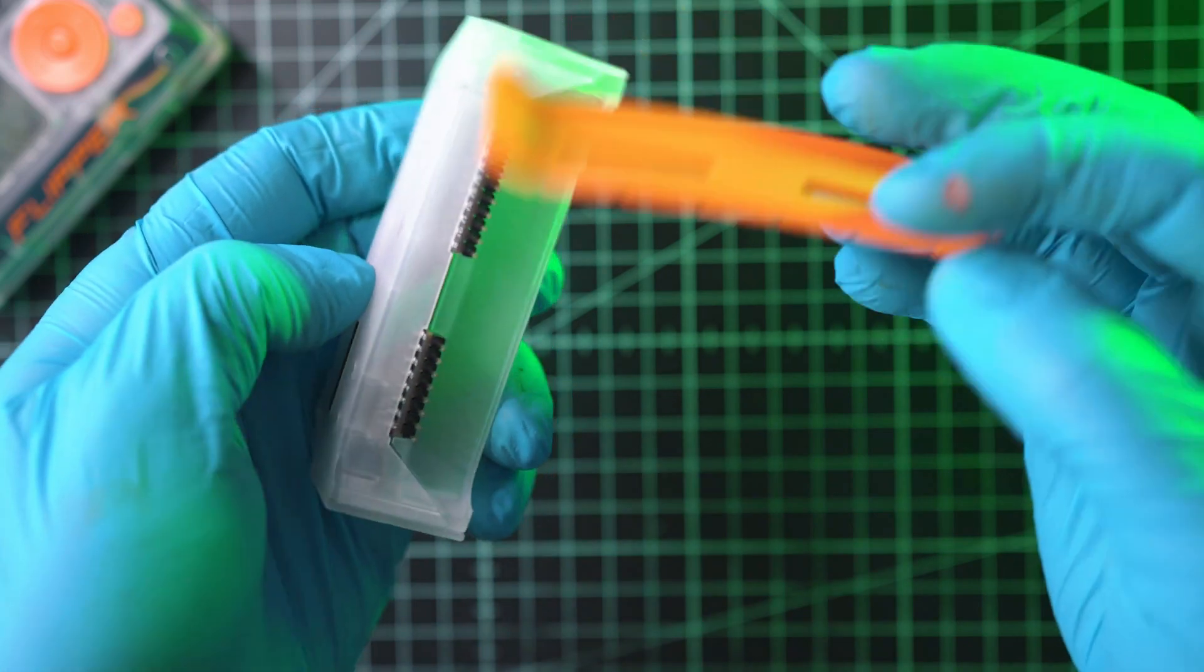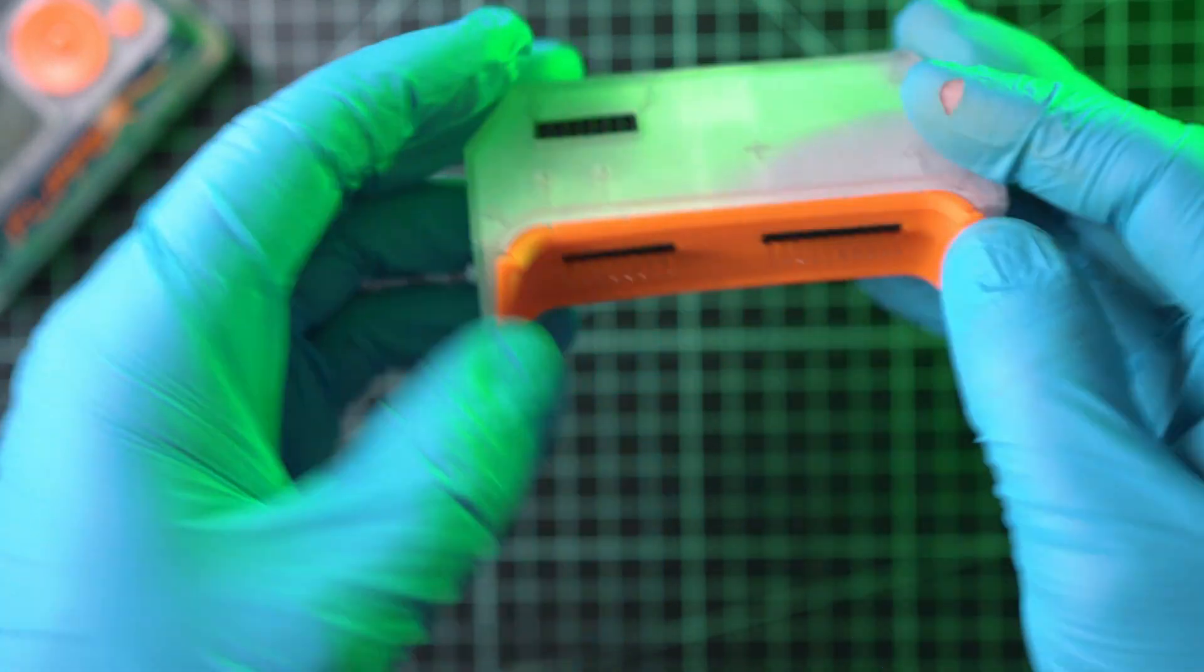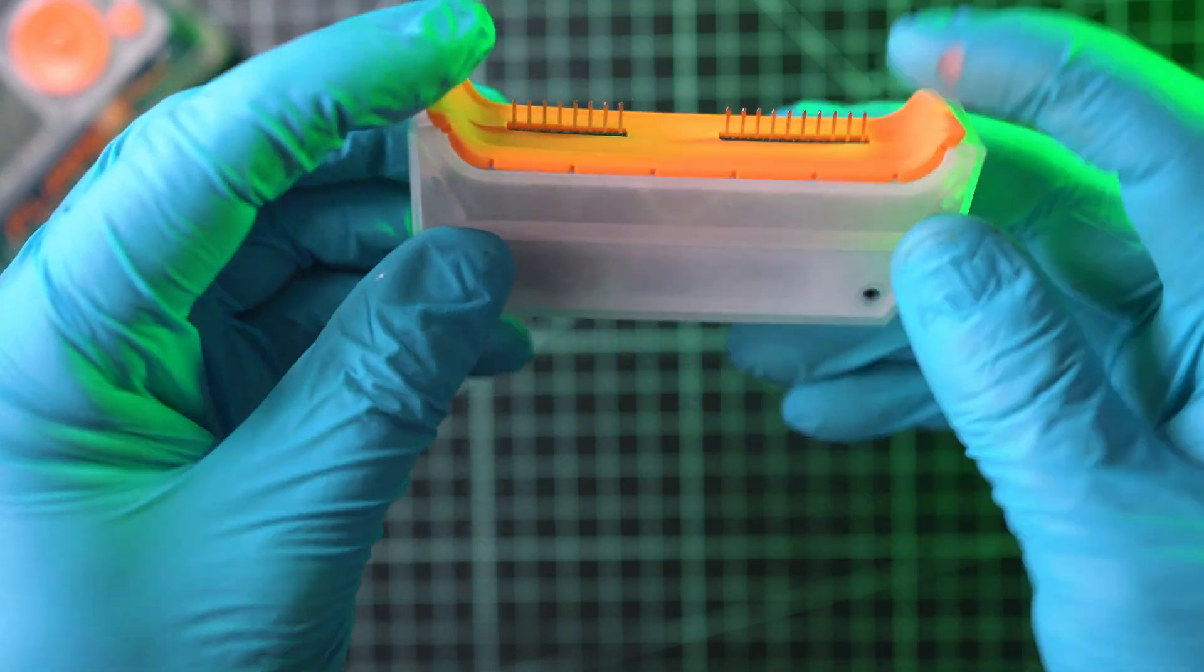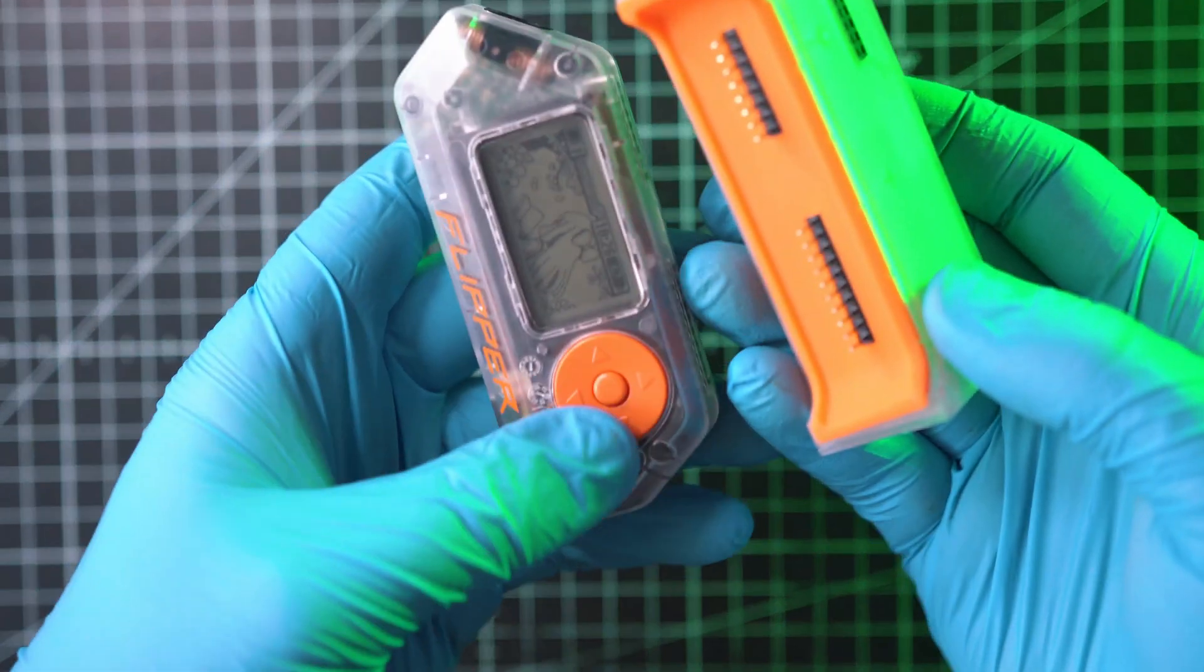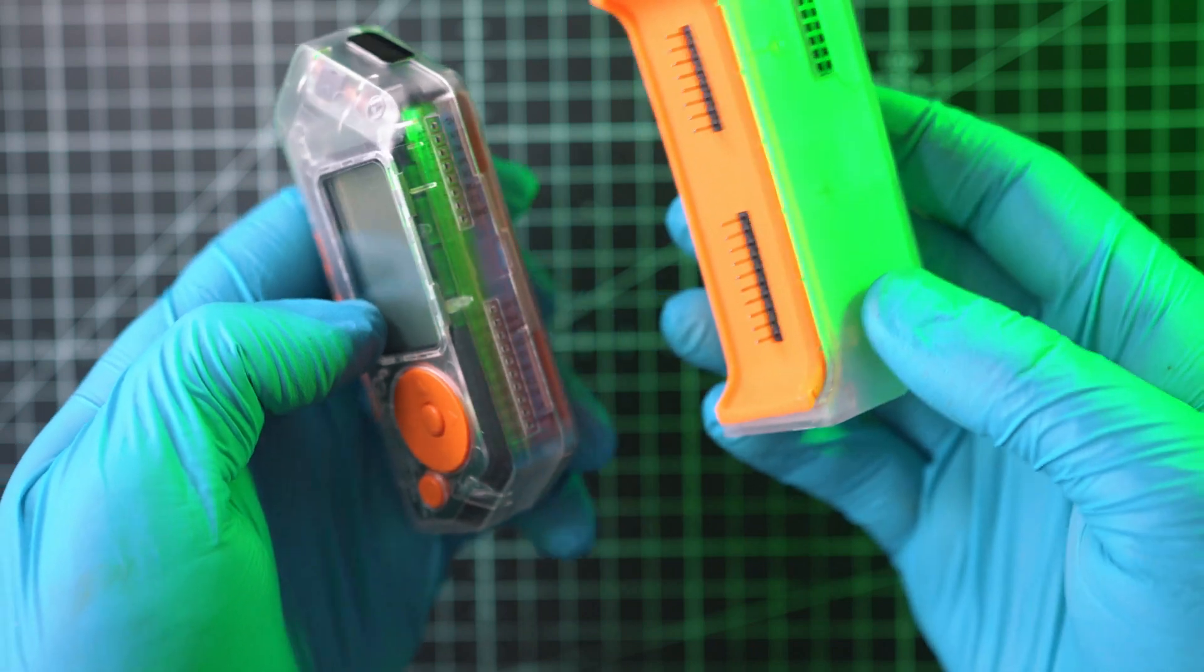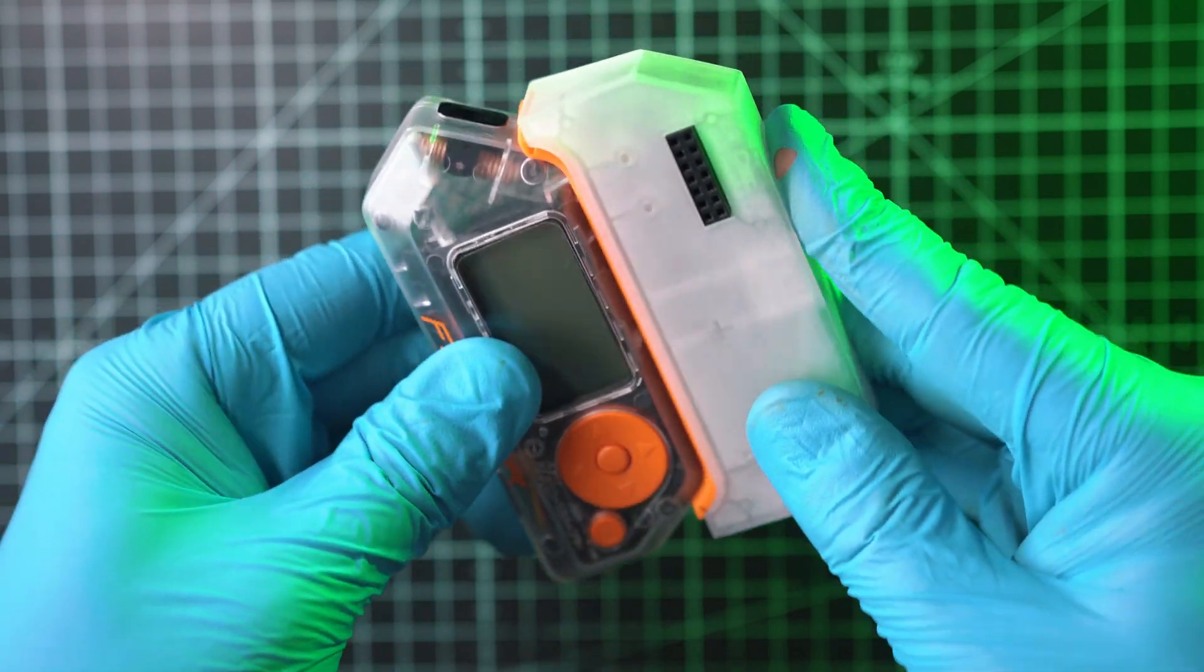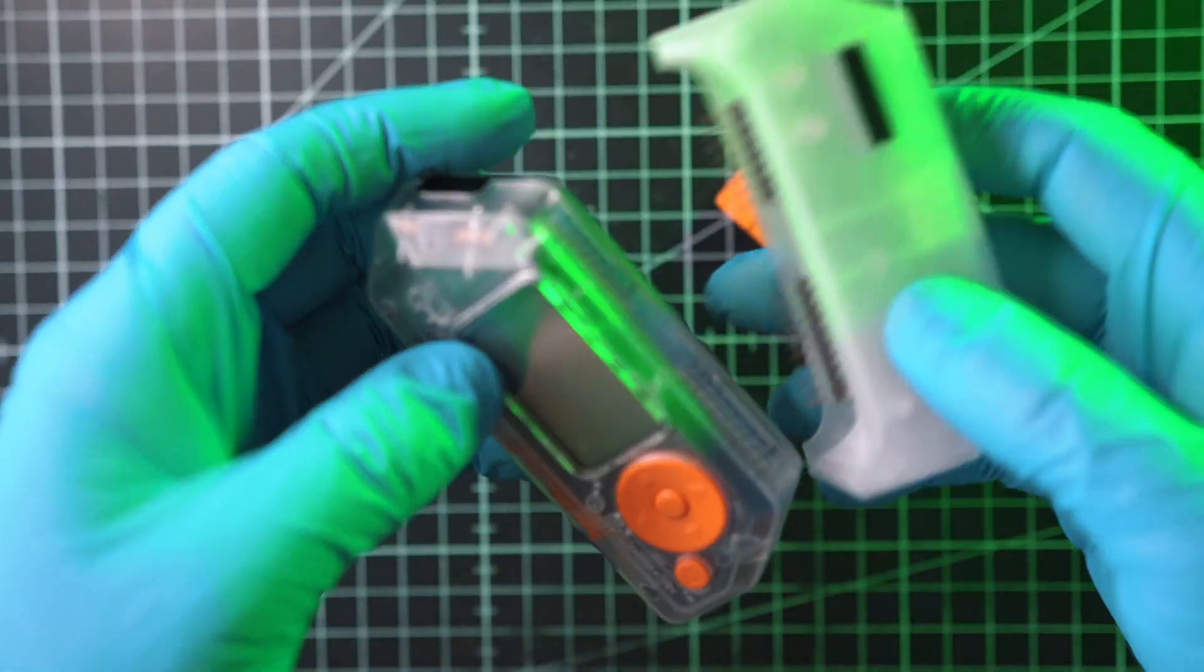Orange cushion on. Hmm, it doesn't fit properly. Let me turn off flipper before attaching external module. And yeah, the cushion has to go as it's preventing proper connection with flipper zero.